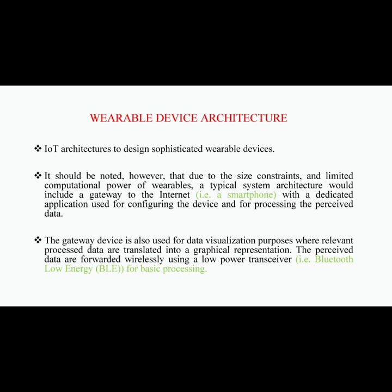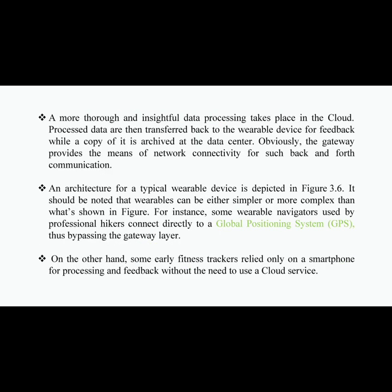The gateway is also used for processing the perceived data and for data visualization, where relevant processed data are translated into a graphical representation. The perceived data are forwarded wirelessly using a low-power transceiver — for example, BLE (Bluetooth Low Energy) — for basic processing. Thorough and insightful data processing takes place in the cloud.